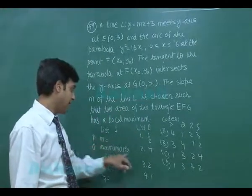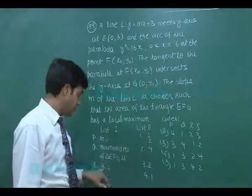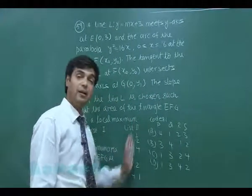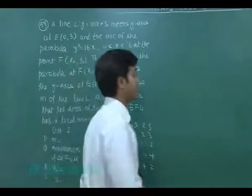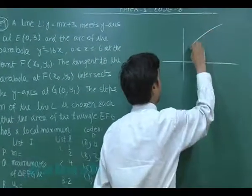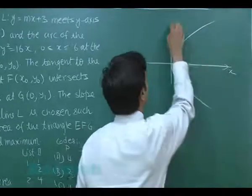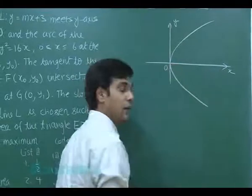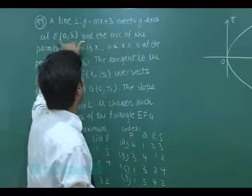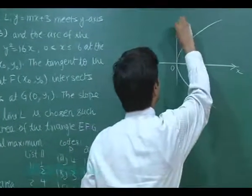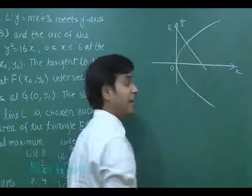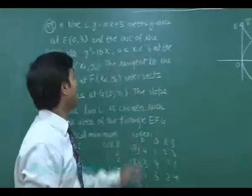We have to match list one and list two. List one contains: m, maximum area of triangle EFG, y₀, and y₁, while list two has the values ½, 4, 2, 1. Let's start by drawing the figure. The parabola is drawn, and the line y equals mx plus 3 meets the y-axis at E, intersecting the parabola at the point F.